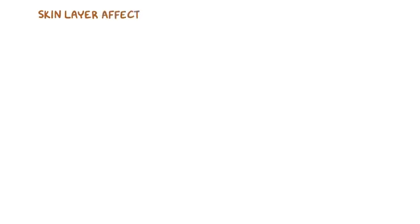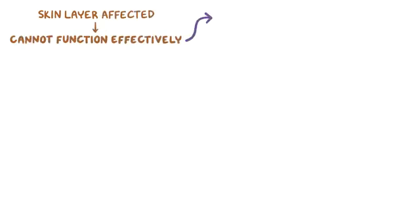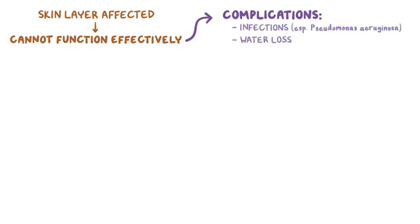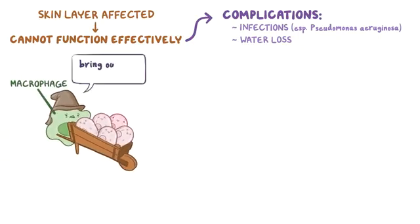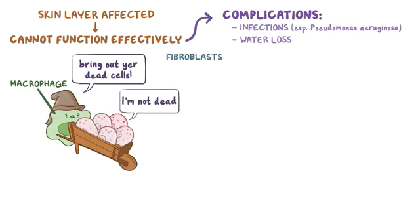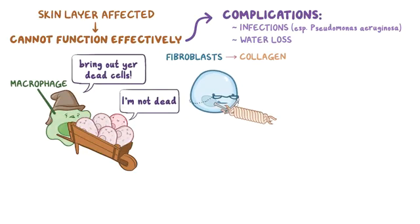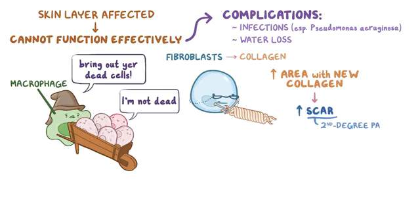When a skin layer is affected, the skin can't function effectively, and common complications are infections, especially from Pseudomonas aeruginosa, and water loss through the damaged skin. As burns heal, macrophages move into the tissue to remove dead cells, and fibroblasts create new collagen to heal the damaged skin. The more extensive the area with new collagen, the more extensive the scar. So scars are common in second degree deep partial thickness burns and third and fourth degree burns.